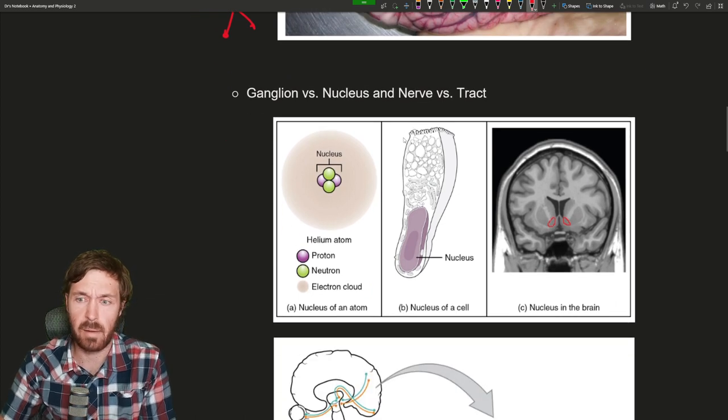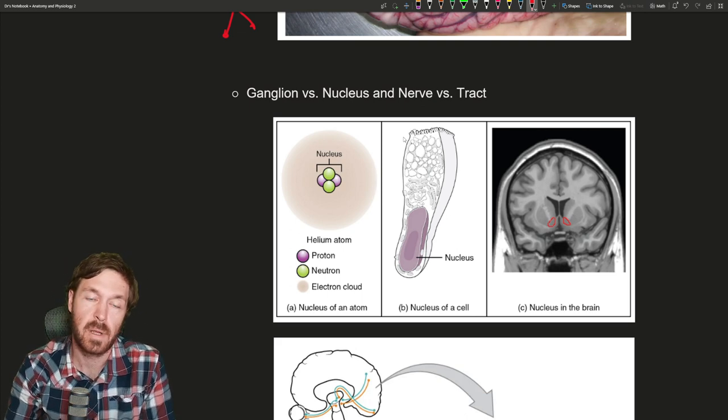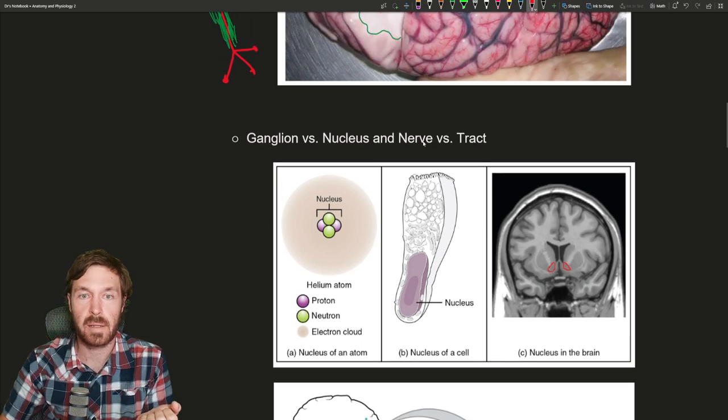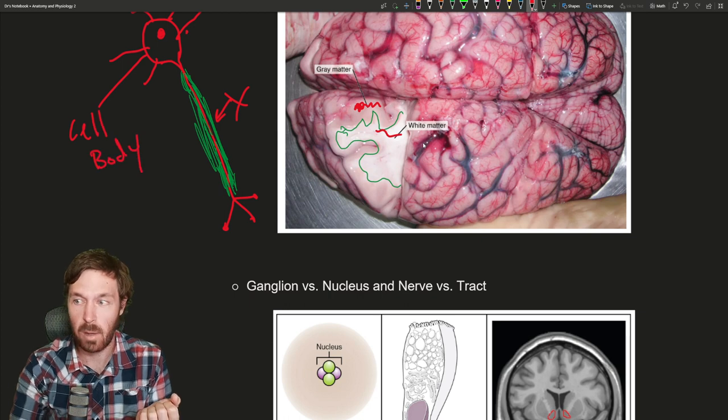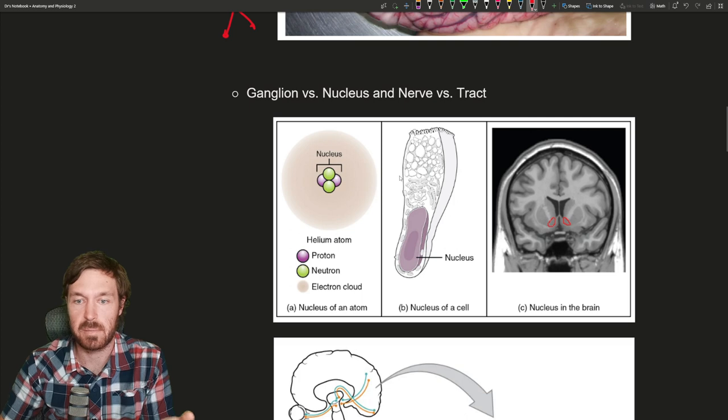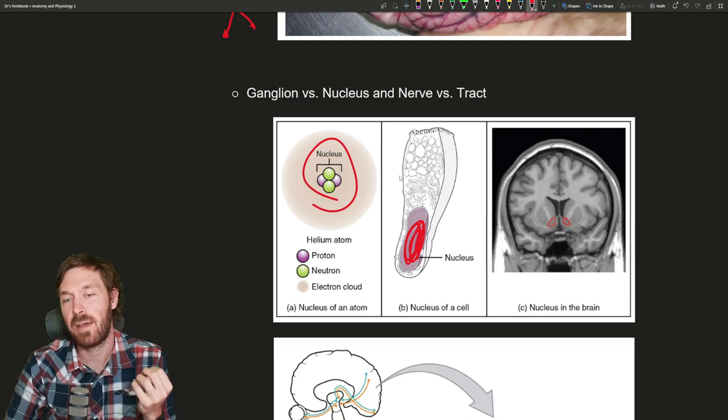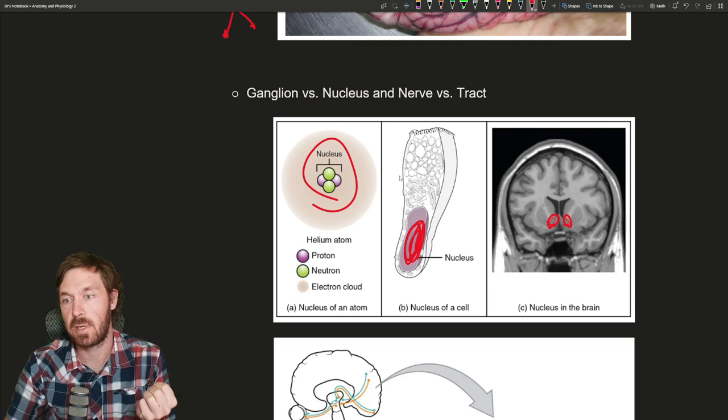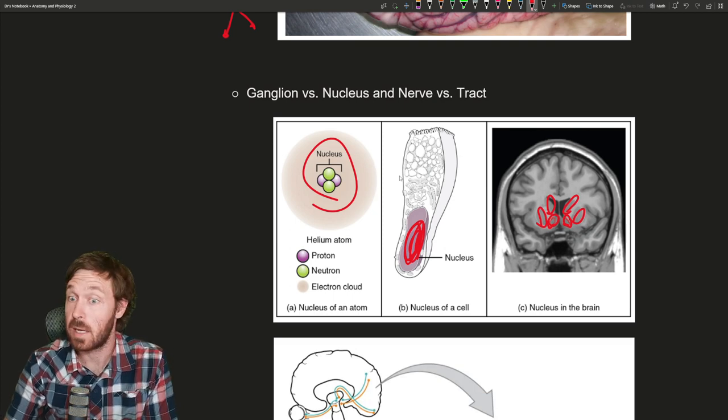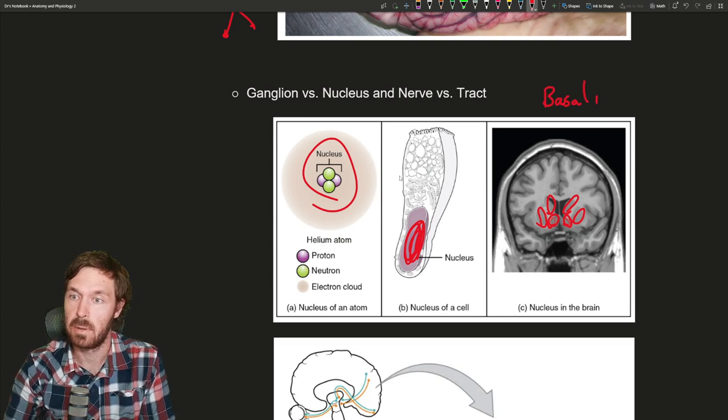Another functional difference between PNS and CNS is in the terms. This is called a cell body - a nucleus. In the brain, we have another nucleus: a cluster of these cell bodies, like circled on this image. You see these darker gray matter areas. That is a nucleus as well. Multiple ones are called the nuclei, such as the basal nuclei. It's a cluster of cell bodies in the central nervous system.